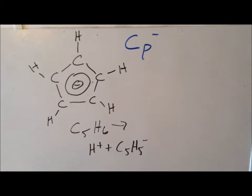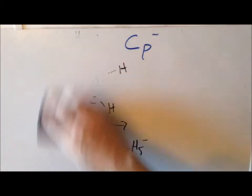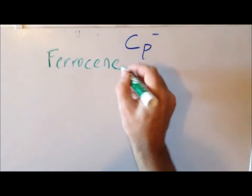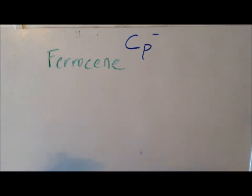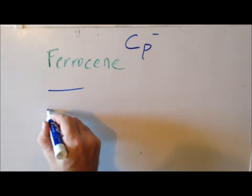The cyclopentadienyl anion is interesting as the conjugate base of a weakly acidic hydrocarbon, but more importantly it can bind to transition metals to form organometallic compounds. The most important such compound is ferrocene. Looking at ferrocene from the side, we have a Cp ring, another Cp ring, and iron in the center.